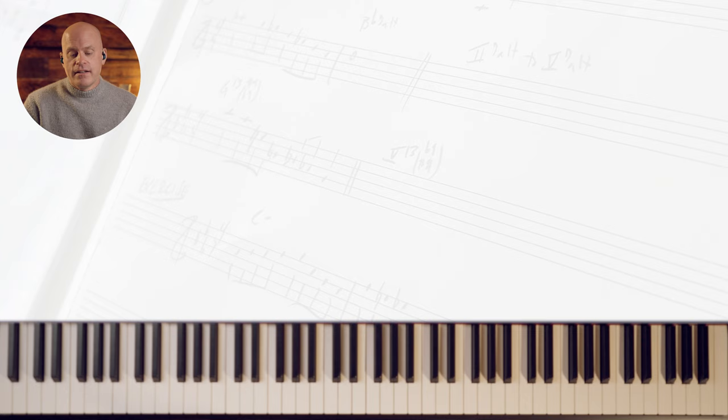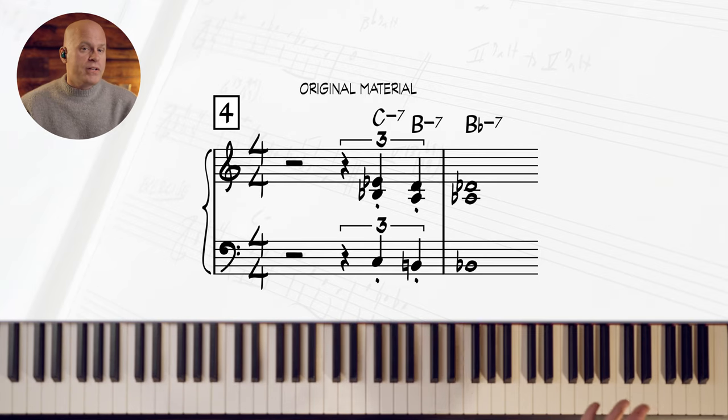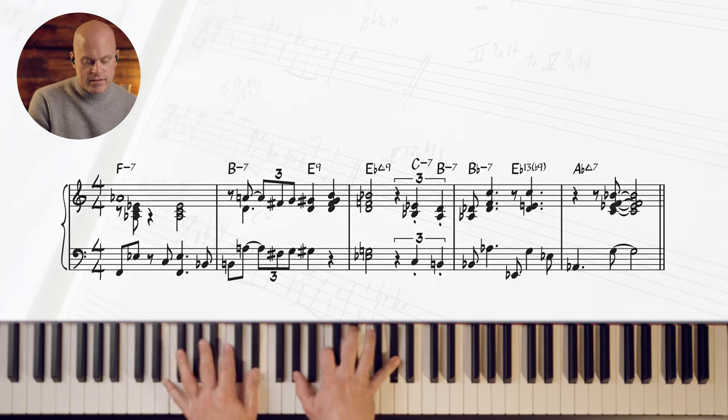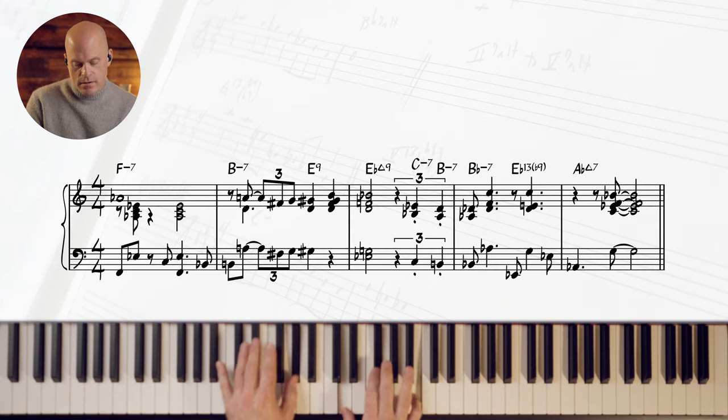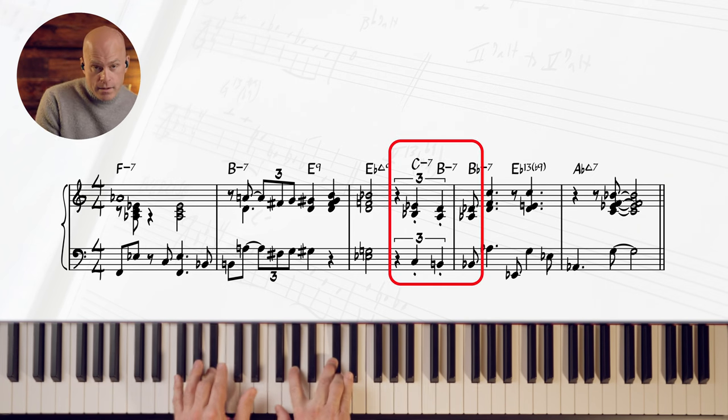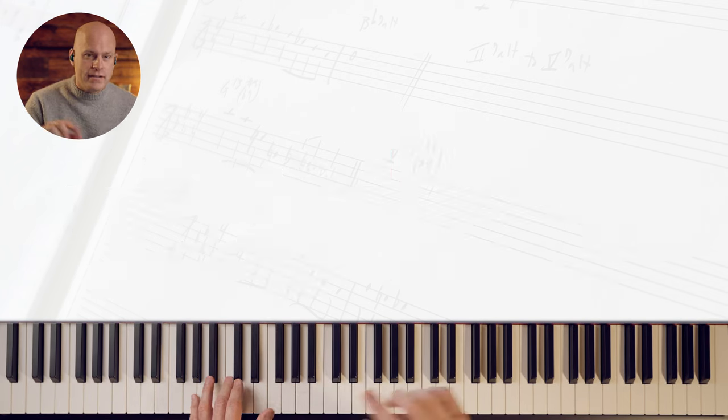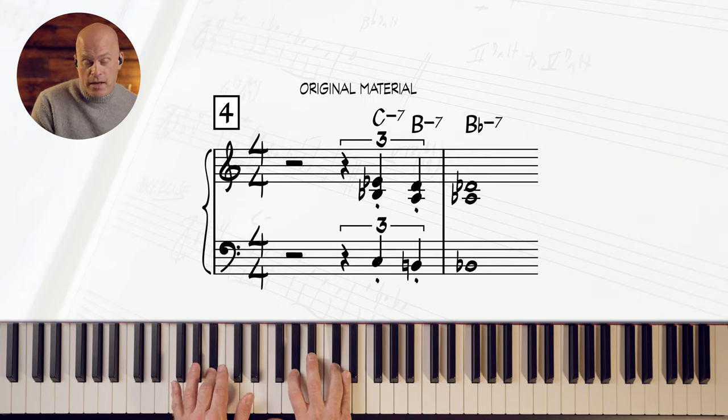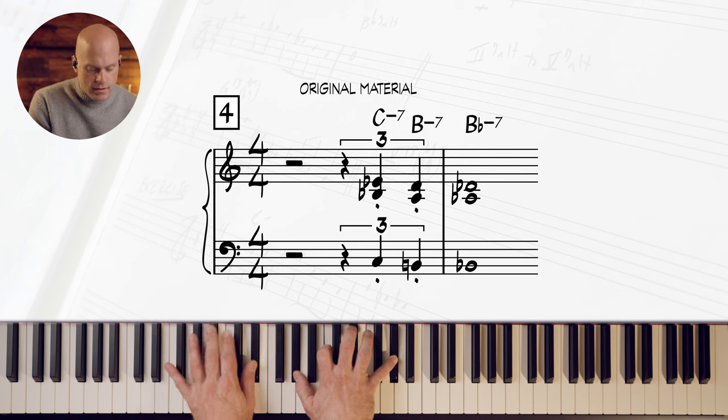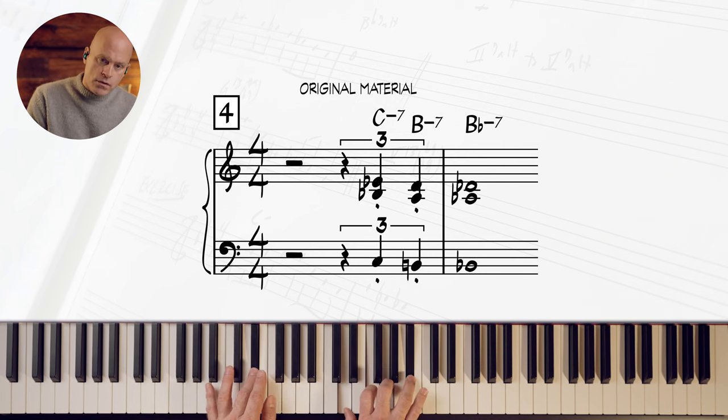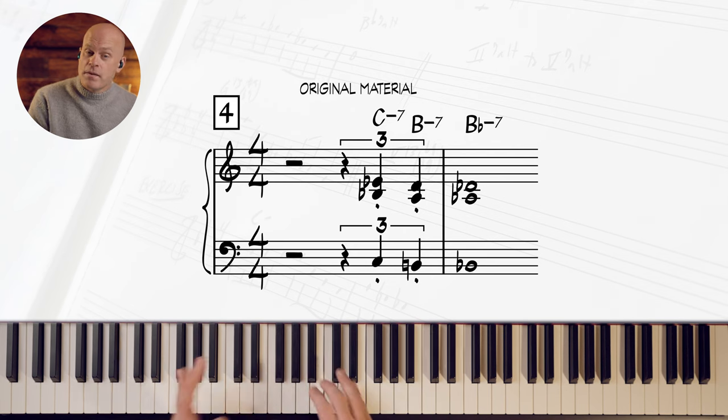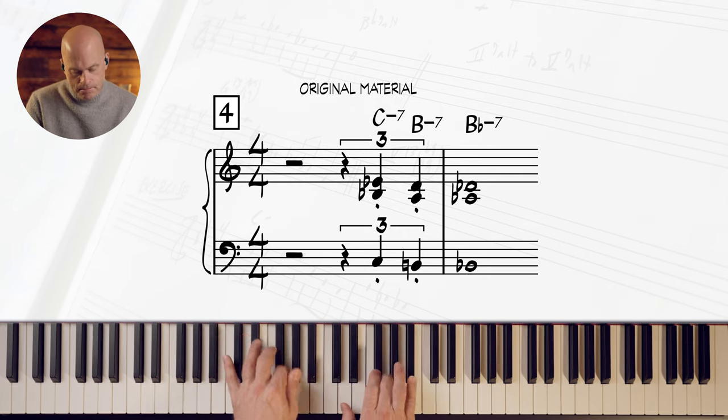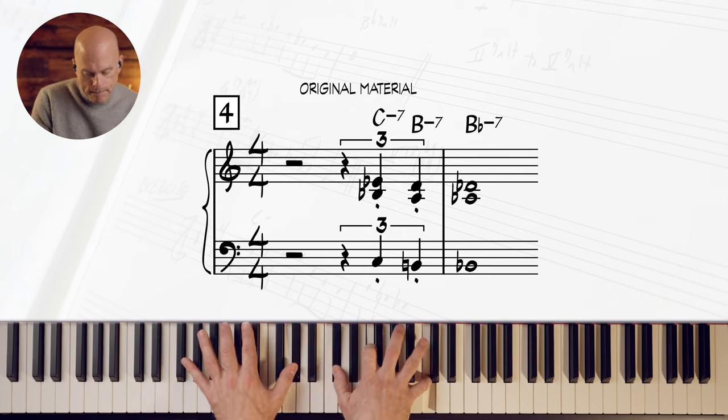Next thing. This is the last two beats of bar 3 going into bar 4. It's setting up the 2-5 of the 4. So in context we have - what we have here is a chromatic double chromatic approach down to the B-flat minor 7.